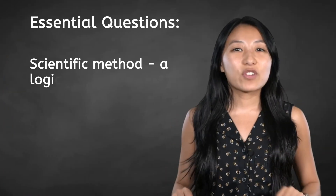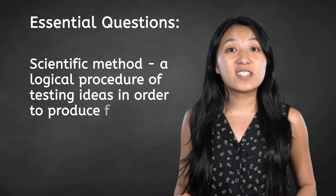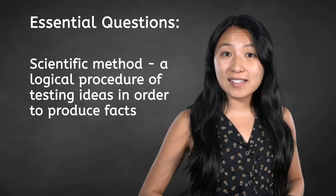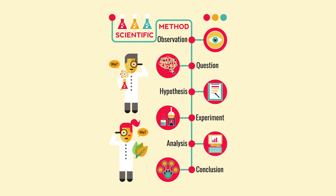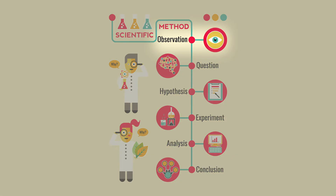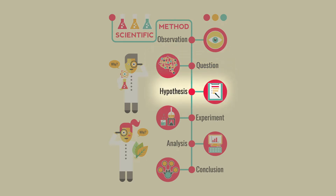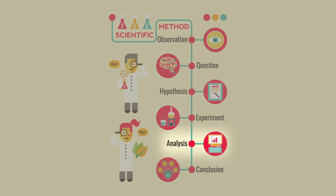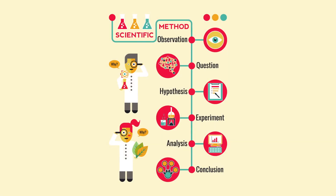The scientific method is a logical procedure of testing ideas in order to produce facts. Here's how it works. 1. Make an observation. 2. Formulate a problem or question arising from the observation. 3. Create a hypothesis — an unproven assumption. 4. Test the hypothesis by experimentation or by collecting data. 5. Analyze and interpret the data. 6. Reach a conclusion. The scientific method is viewed as cyclical.